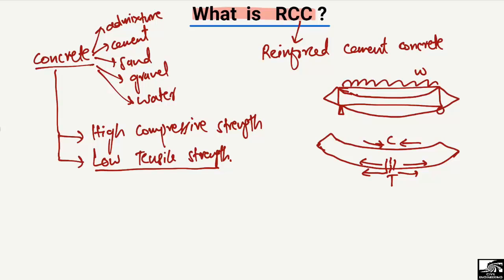Due to these cracks, the beam is not going to take more load. If the cracks develop and progress into the compression zone, we will have failure of the beam at the tension zone because of the low tensile strength of the concrete — causing early failure.